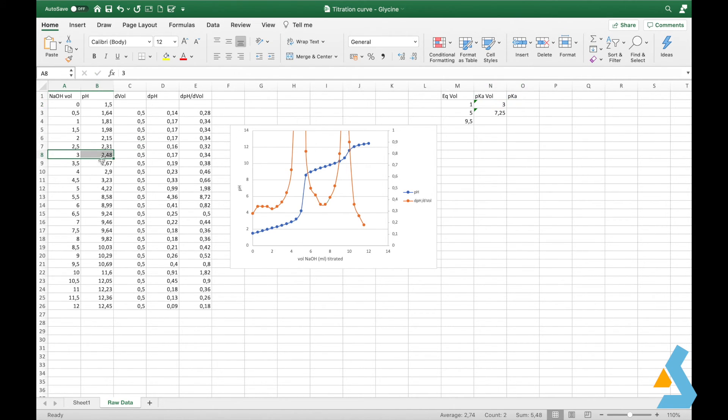Then we check these values in the volume column and check which pH values they correspond to. For example, for 3, we check corresponding pH. In this case, we found the pKa value as 2.48.